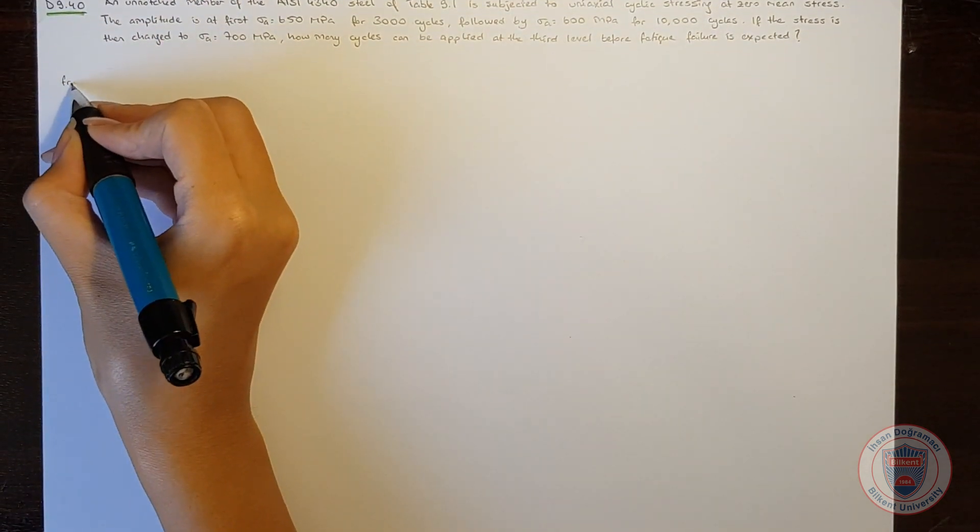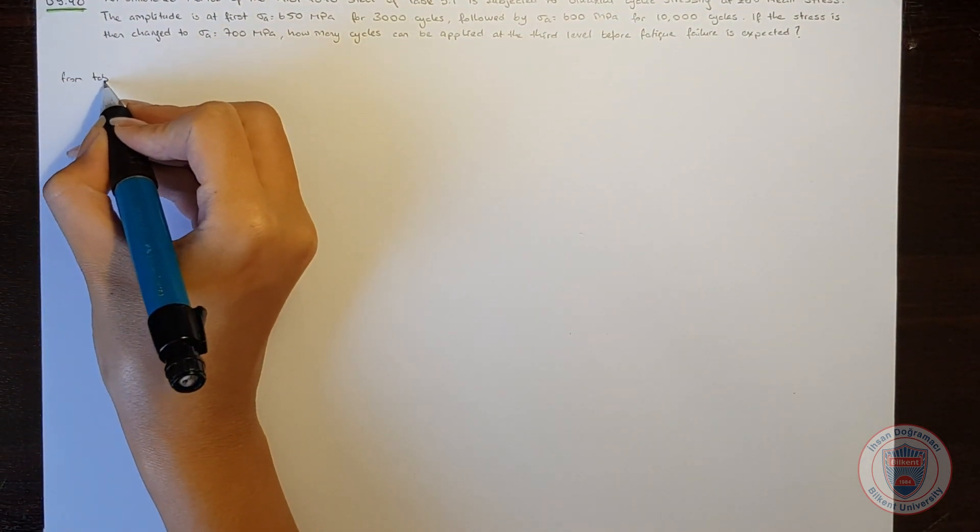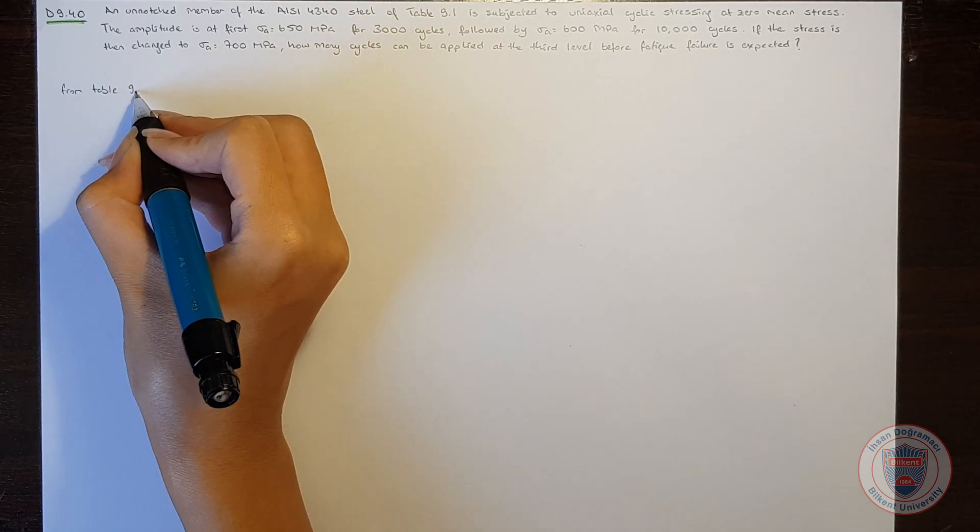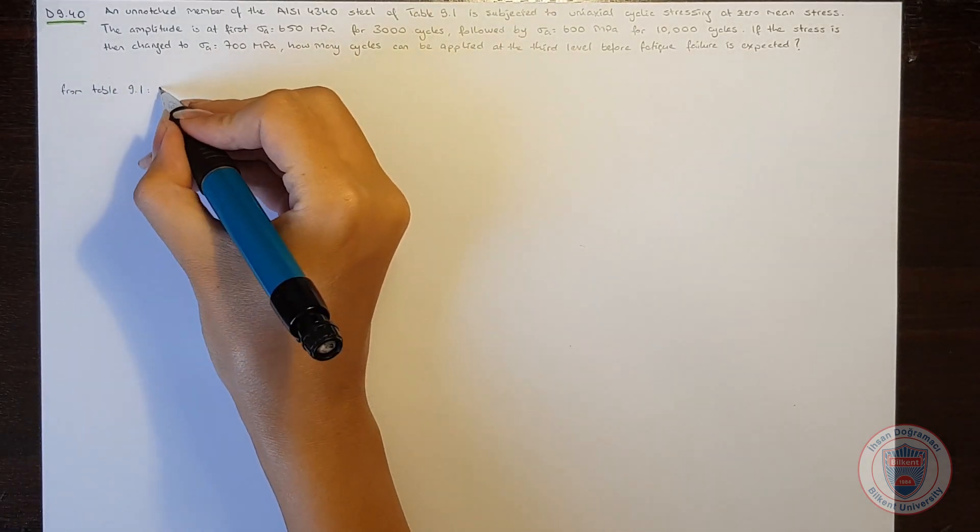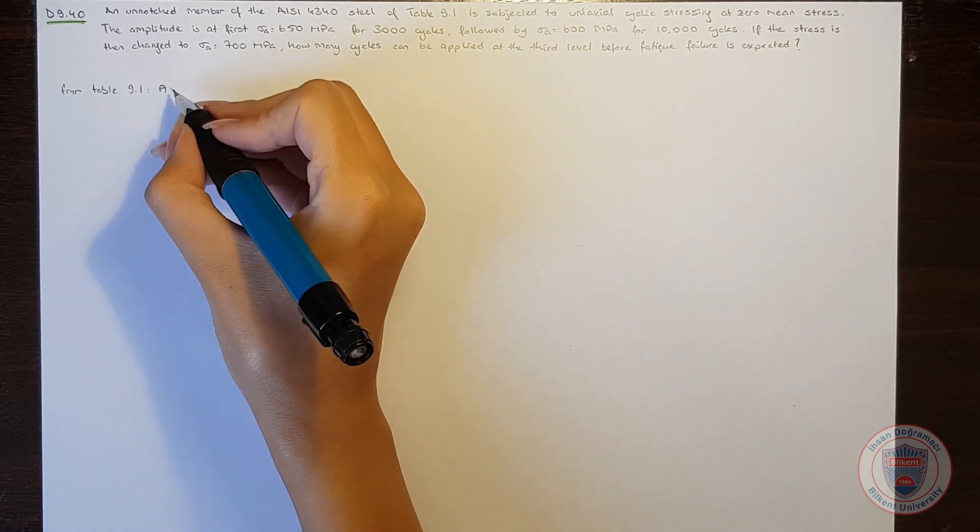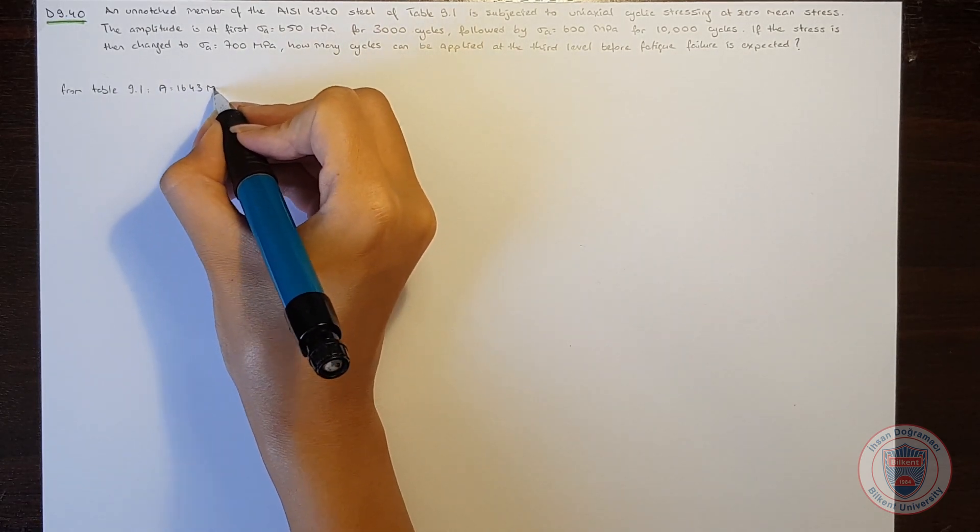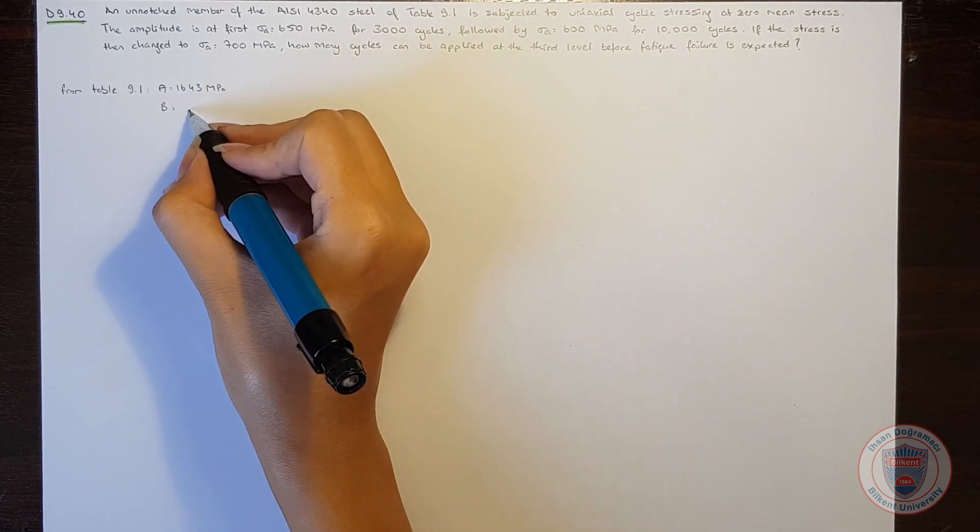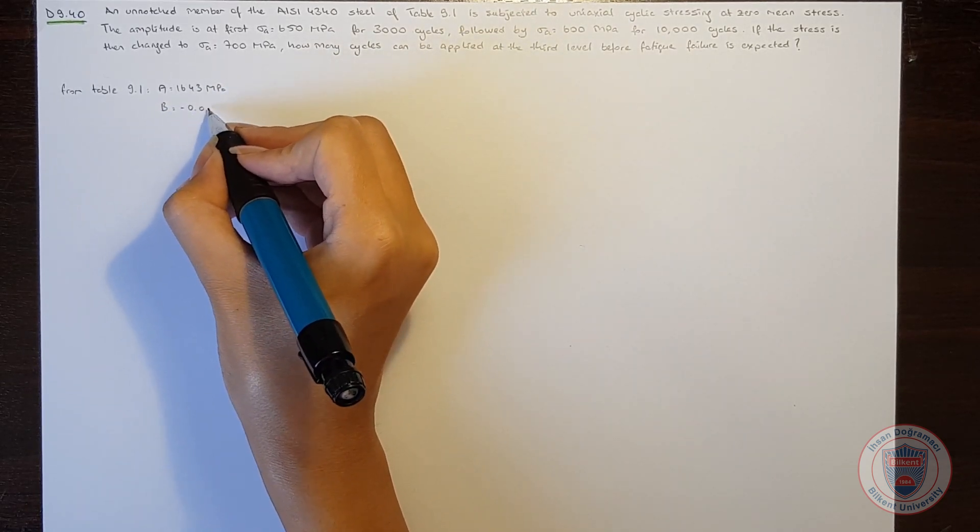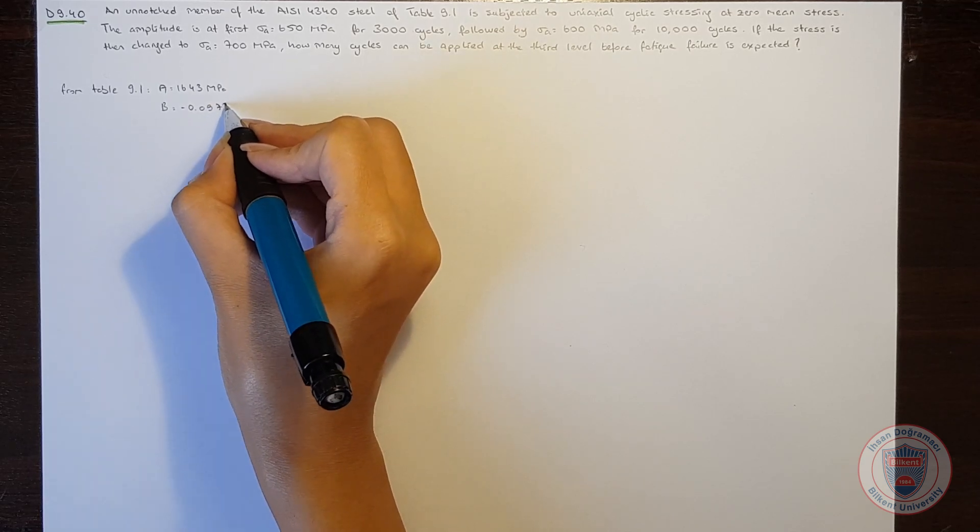Let's first write the material properties. From table 9.1, A is equal to 1643 MPa and B is minus 0.0977.